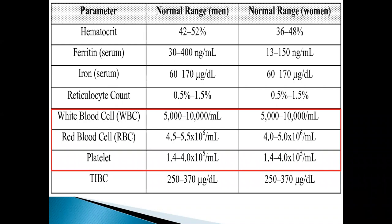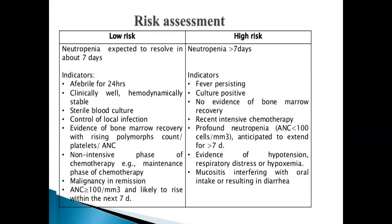Risk assessment — low risk versus high risk: neutropenia expected to resolve within seven days is low risk; more than seven days is high risk. In low risk, fever lasts around 24 hours; in high risk, fever persists. Low risk patients are clinically well and hemodynamically stable. High risk patients have positive blood cultures, while low risk have sterile blood cultures. In high risk there is no evidence of bone marrow recovery; in low risk, platelet and ANC counts start recovering.